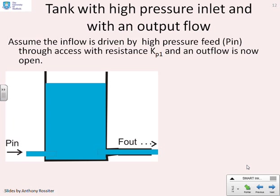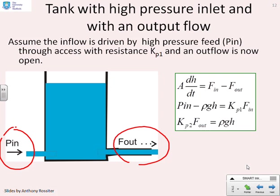Now what happens if we add an outflow? So here we've got our high pressure inflow, p in. But we're also going to allow some of this fluid to escape. What sort of model will we end up with here? Now I've put the same equations as before, there's nothing new here. A times dh/dt equals f in minus f out. f in we've done is going to be p in minus ρgh equals kp1 times f in. And earlier we defined f out.